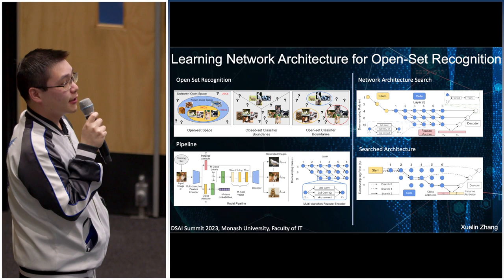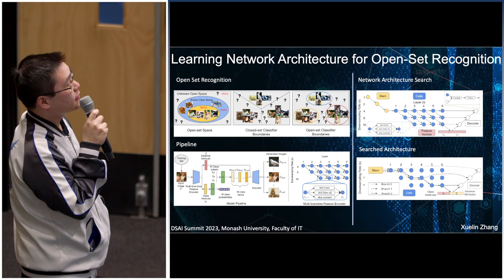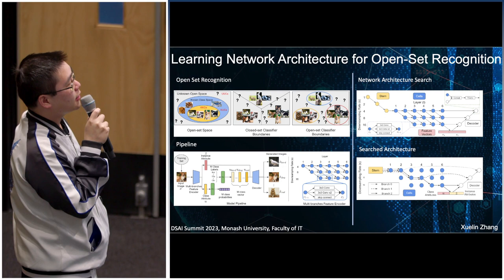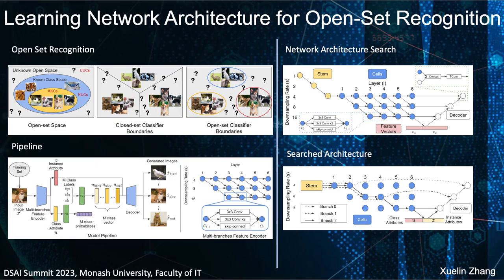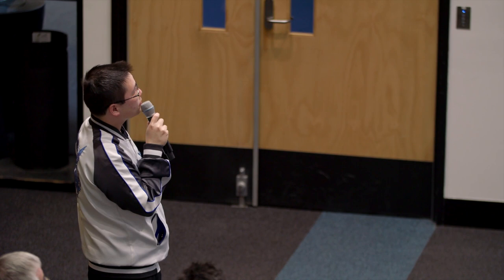That's why we use neural architecture search to automate the process of finding an architecture. We build a supernet connecting all of the cells, then after searching we select some of the cells. To ensure the model works for open set recognition, we use VAE contrastive learning to reduce open space risk, and we also use pseudo auxiliary searching, where we treat part of the known classes as unknown classes during the searching phase.